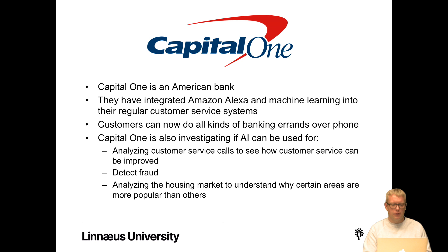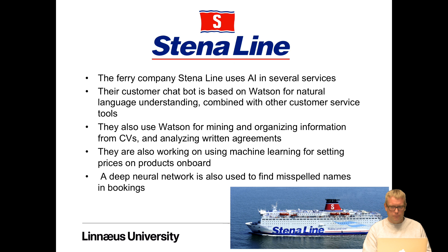Capital One, an American bank, has integrated Amazon Alexa and machine learning into their regular customer service — customers can now do all kinds of banking errands over phone or using an Alexa speaker. Capital One is also investigating AI for analyzing customer service calls to improve service, detect fraud, and analyze the housing market to understand why certain areas are more popular than others.